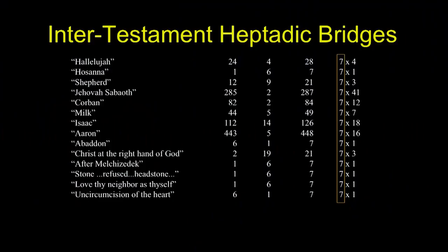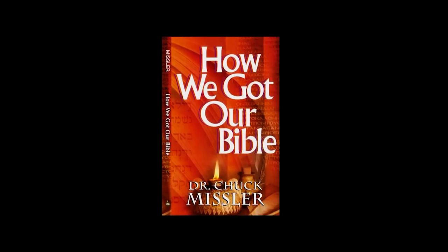This even bridges the Old and New Testaments. There are words that have this heptatic feature if and only if you put the Old and New Testaments together. The word 'hallelujah' occurs 24 times in the Old Testament and four times in the New — four plus 24 is 28, a multiple of seven exactly. 'Hosanna,' 'shepherd,' 'Jehovah Sabaoth' — I could go through a list of these words that are not multiples of seven in either Testament alone, but are a multiple of seven when you put the Old and New Testaments together.